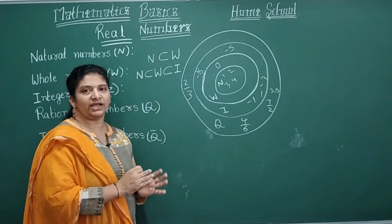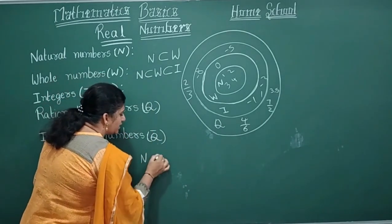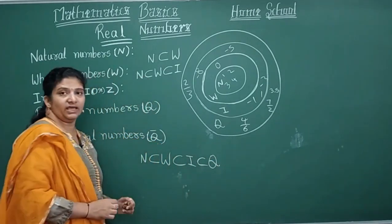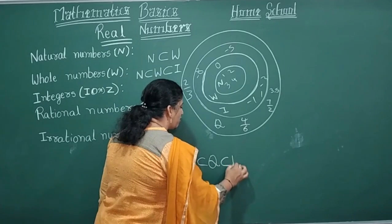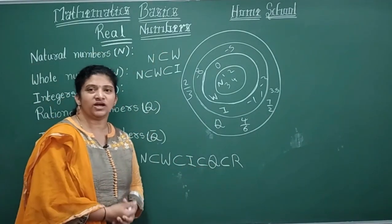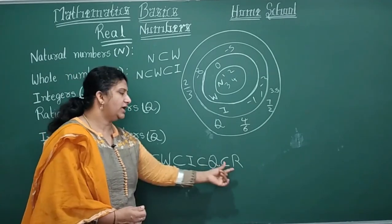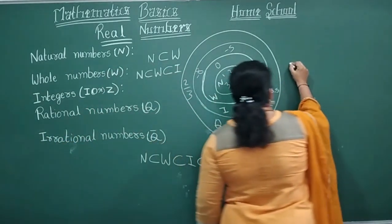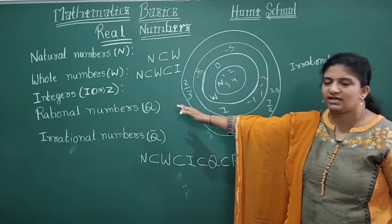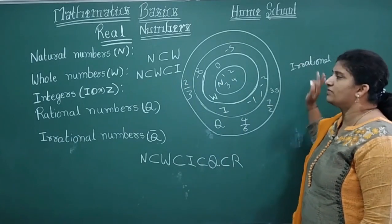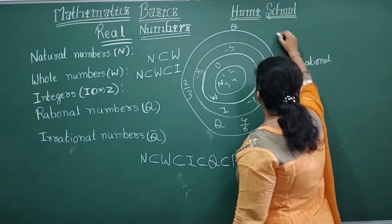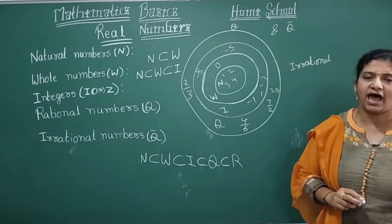All these are subsets of the letter R — real numbers. R represents real numbers. In real numbers we have one more type: irrational numbers. Rational numbers and irrational numbers together are called real numbers. So real numbers is classified into two types: rational and irrational.